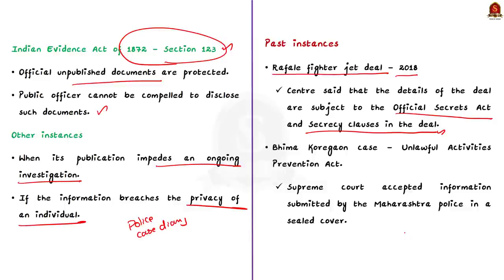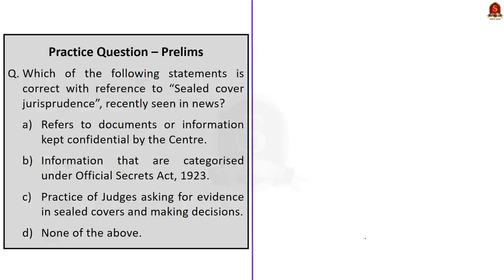Another instance is the recent Bhima Koregaon case, where activists were arrested under the Unlawful Activities Prevention Act. In this case, the Supreme Court relied on information submitted by the Maharashtra Police in a sealed cover. These are two instances where this jurisprudence was used by the court. These are the important points you need to know about sealed cover jurisprudence.